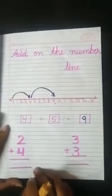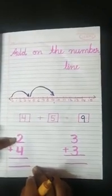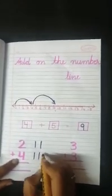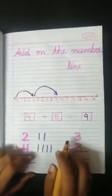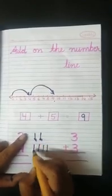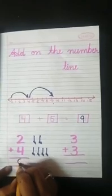One more method to do addition is drawing lines. The first number is two, so I draw two lines. The next number is four, so I draw four lines. Now we count all lines together: one, two, three, four, five, six. We get the answer six. Two plus four equals six.